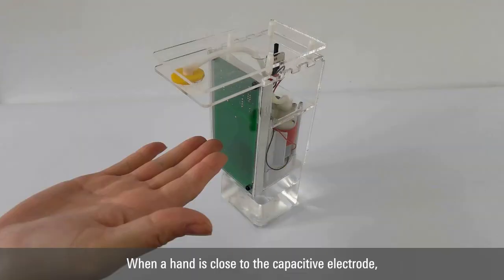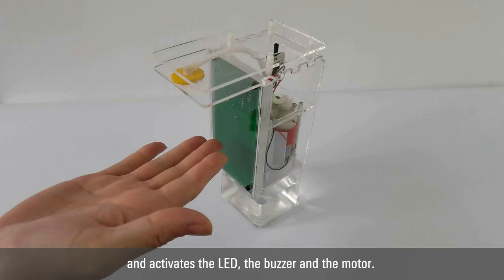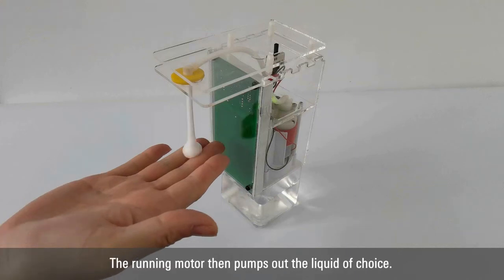When a hand is close to the capacitive electrode, the MCU detects the change of electrostatic capacitance and activates the LED, the buzzer, and the motor. The running motor then pumps out the liquid of choice.